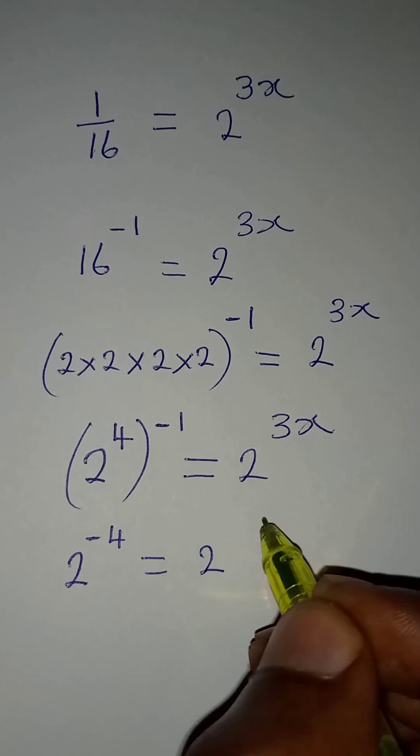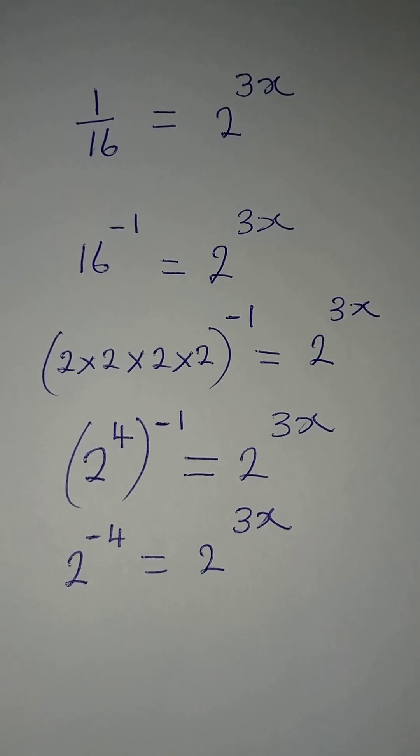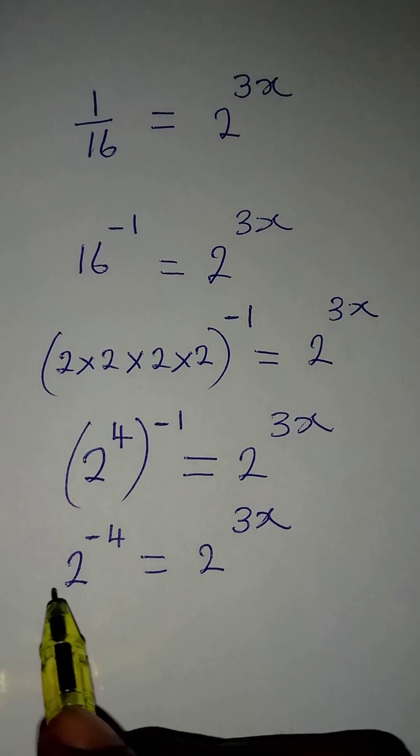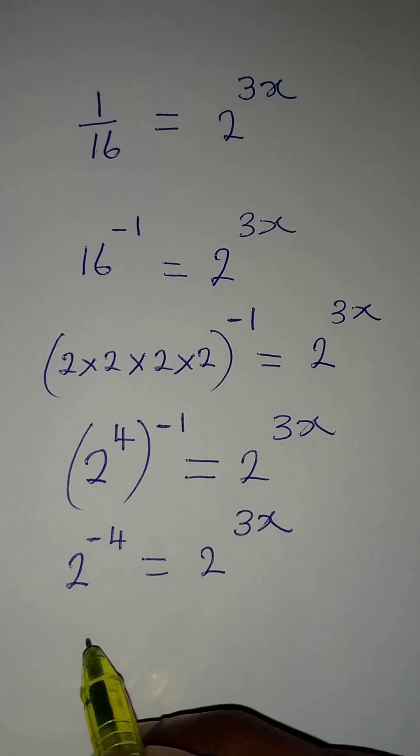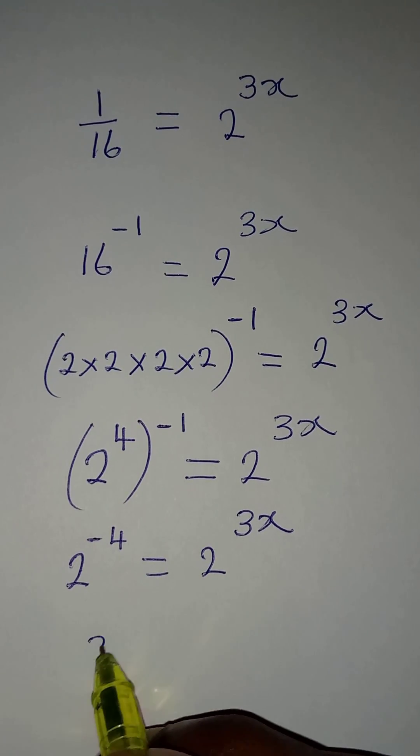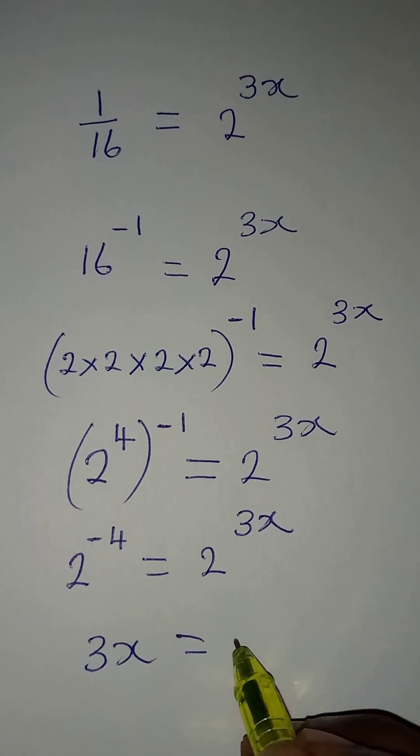This will be equal to 2 to the power of 3x. Now, the bases are equal and we can now equate the powers, meaning that 3x is equal to minus 4.